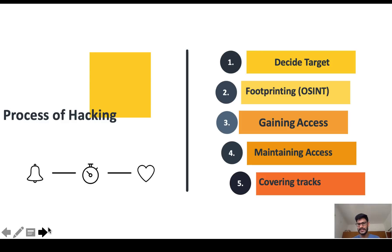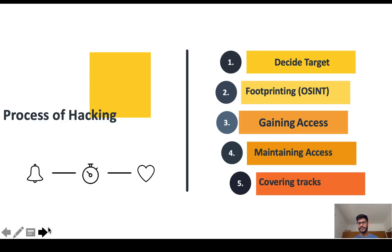The third step is gaining access. After footprinting, you find a vulnerability or weakness inside the system and use it to get access. Once inside, you can access any data — if it's a Facebook profile, you can see every piece of data in that profile.